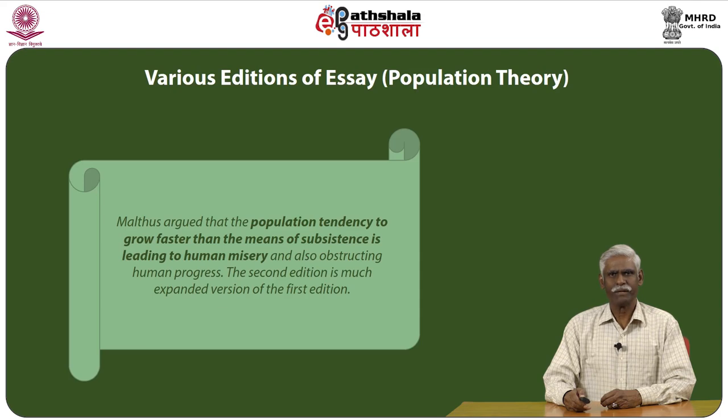The second edition is a much expanded version of the first edition. While the first edition contained his arguments against the opinions of Condorcet and Godwin, the second edition emphasizes arguments against the poor laws. According to Malthus, poor laws are meant for protecting the poor, but Malthus thought that poor laws had encouraged population growth. He published four more editions subsequently.